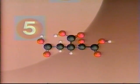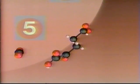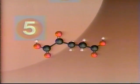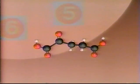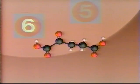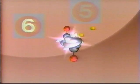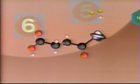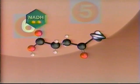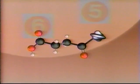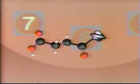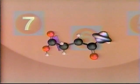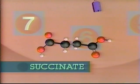Isocitrate loses a molecule of carbon dioxide, forming the five-carbon alpha-ketoglutarate. Alpha-ketoglutarate then undergoes further reaction to form succinyl-CoA. Succinyl-CoA reacts with an ADP and a phosphate, releasing coenzyme A and ATP, and forming succinate.